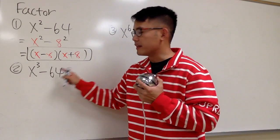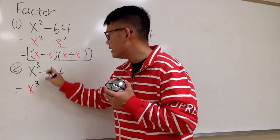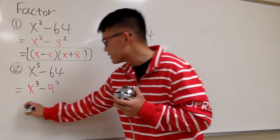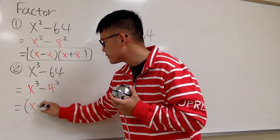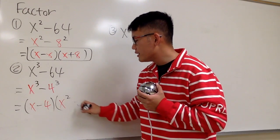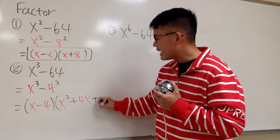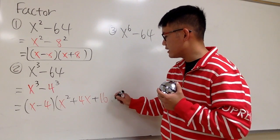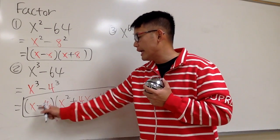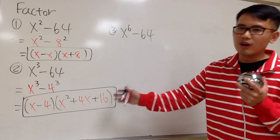For x to the third power minus 64, this is going to be the difference of two cubes. I will look at this as x to the third power minus 4 to the third power, since 64 equals 4 cubed. We will get x minus 4 in the first parentheses, and then in the second parentheses we get x squared, plus x times 4 which is 4x, and then we add 4 squared which is 16. Remember the formula: a to the third power minus b to the third power equals a minus b times a squared plus ab plus b squared. That's how you factor the difference of two cubes.